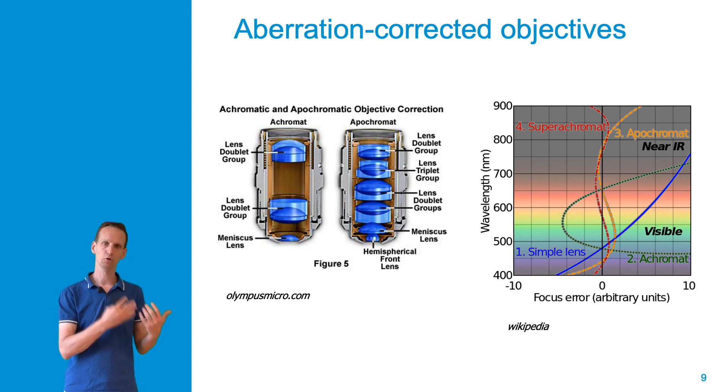In the graph to the right, you can see in blue the typical focus error for a non-aberration-corrected simple lens, as a function of wavelength. In the other colors, we see the different degrees of aberration correction.